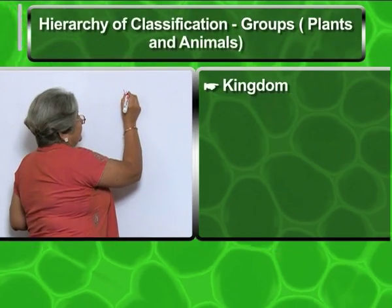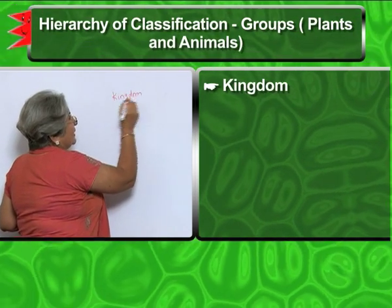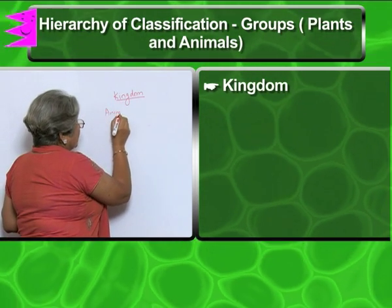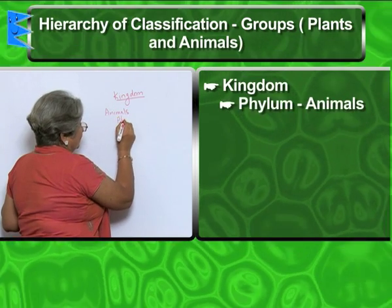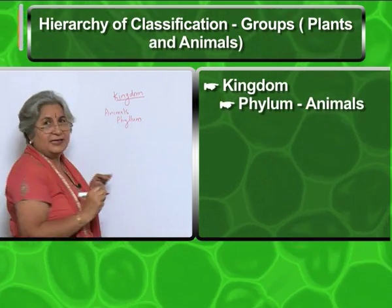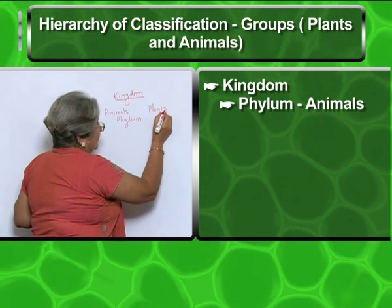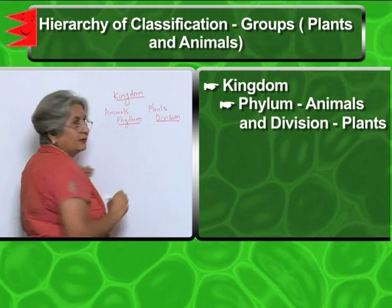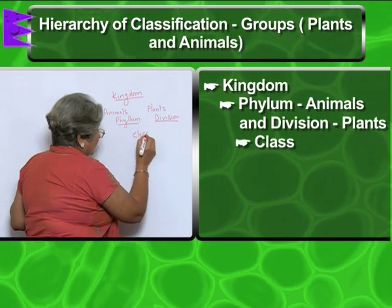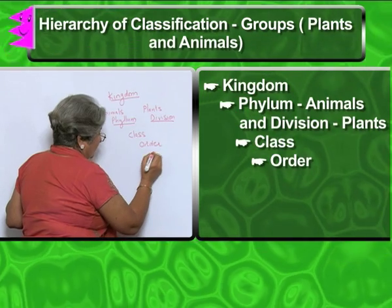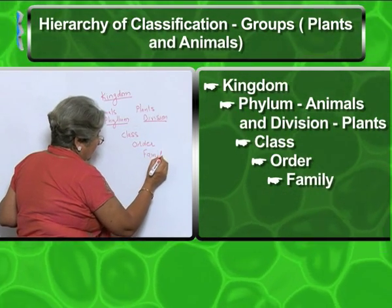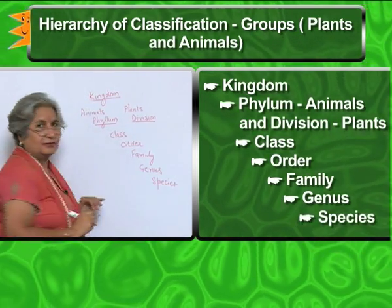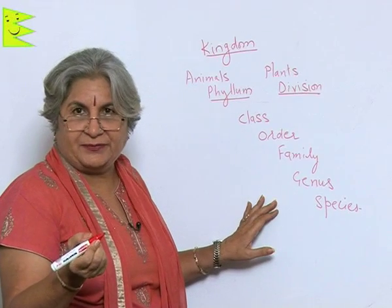First of all, there is kingdom — like plant kingdom or animal kingdom. In the case of animals, the next level is phylum, but in the case of plants, we call it division. After this, there is class, then order, then family, then genus, and finally species — like an individual name or an individual.